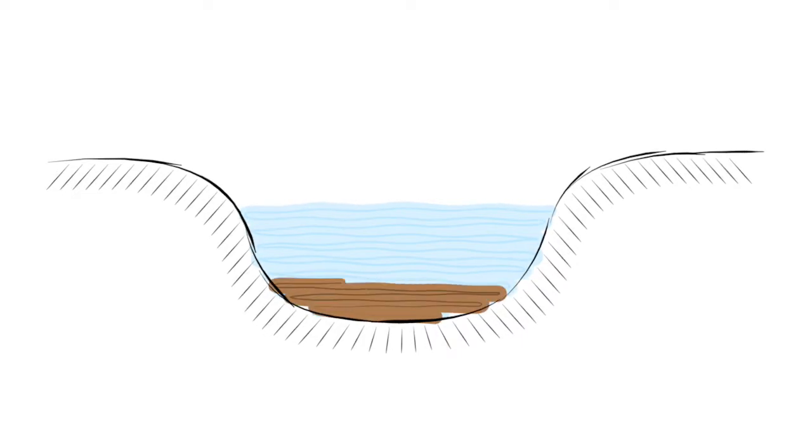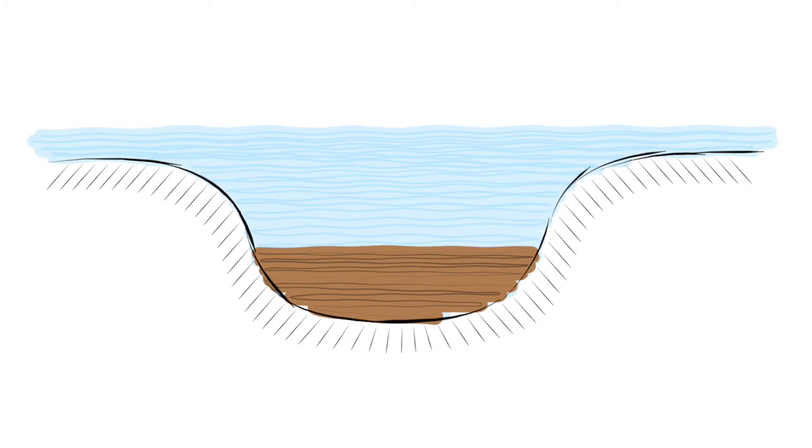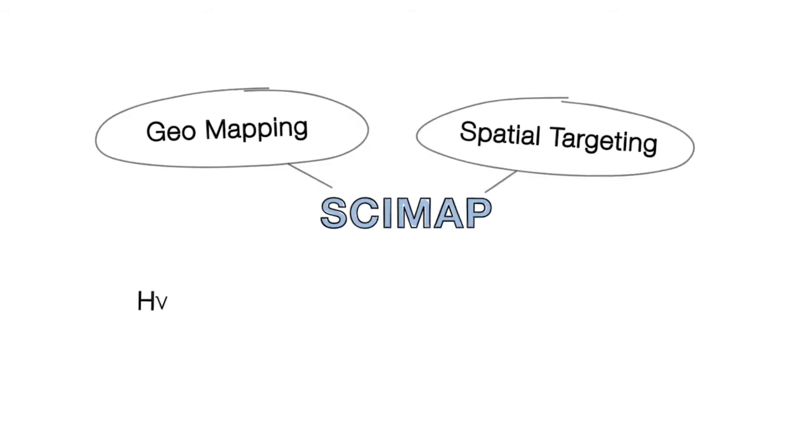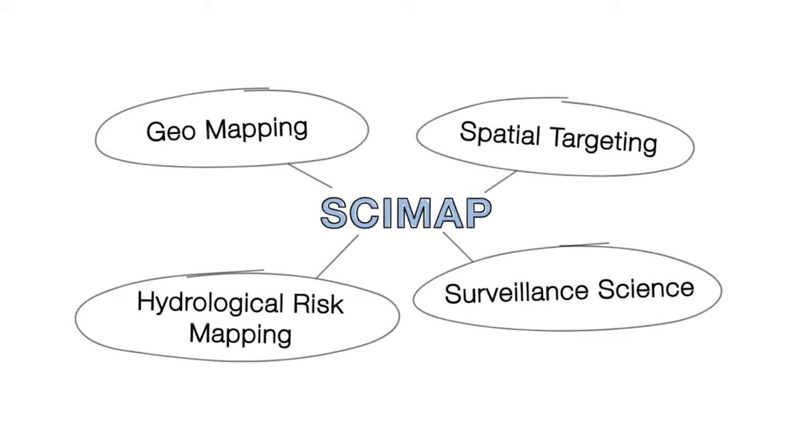Over time, this sediment builds up and raises the riverbed, which causes flooding. To stop this problem, we have to change how the landscape is managed. Scimap provides a toolset to help with cost-effective catchment management.